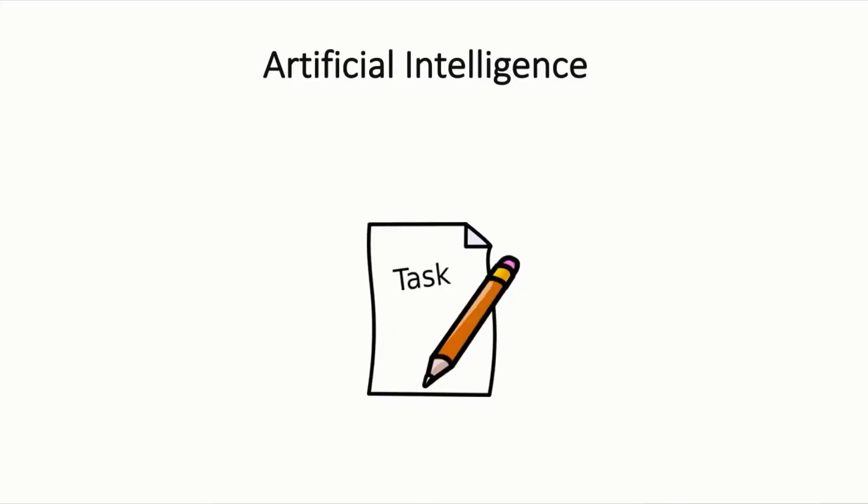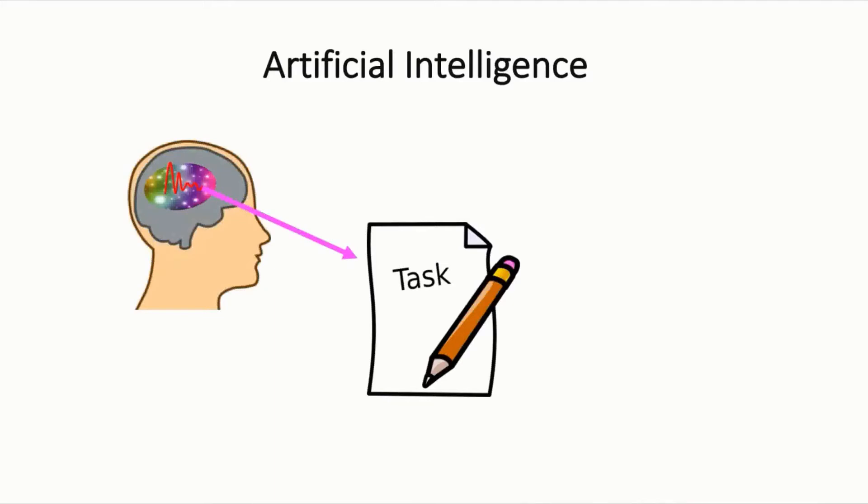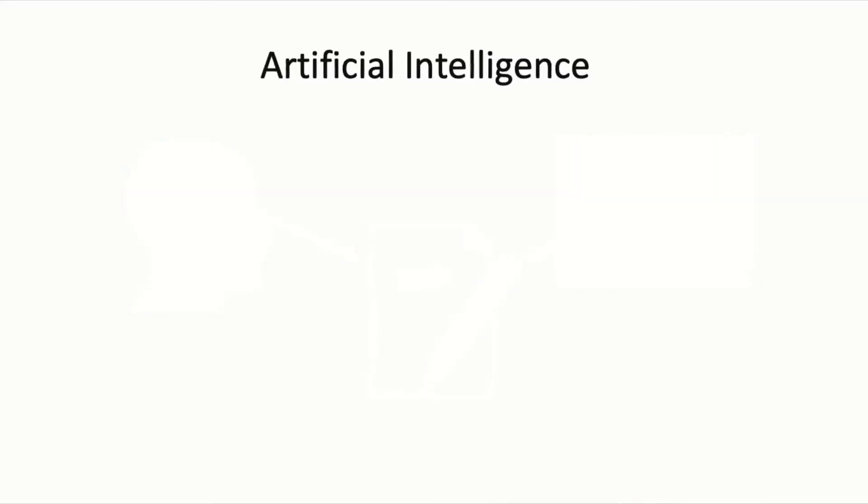So now let's revisit our original definition of AI and expand on it. Originally, we had said AI was tasks requiring human intelligence being accomplished by machines. I'd like to expand on this by describing AI as a model that maps inputs to solutions that can generate intelligent behavior.